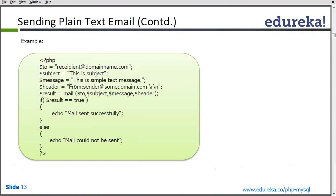Apart from 'From', we can also have a 'Reply-To' header, meaning if someone replies to the email, the reply goes to a specified address. I will show this in the practical example. The result variable stores the return value of mail(), which is a boolean — true or false — based on whether the mail was sent successfully or failed. Based on this result, we print either 'mail sent successfully' or 'mail could not be sent'.